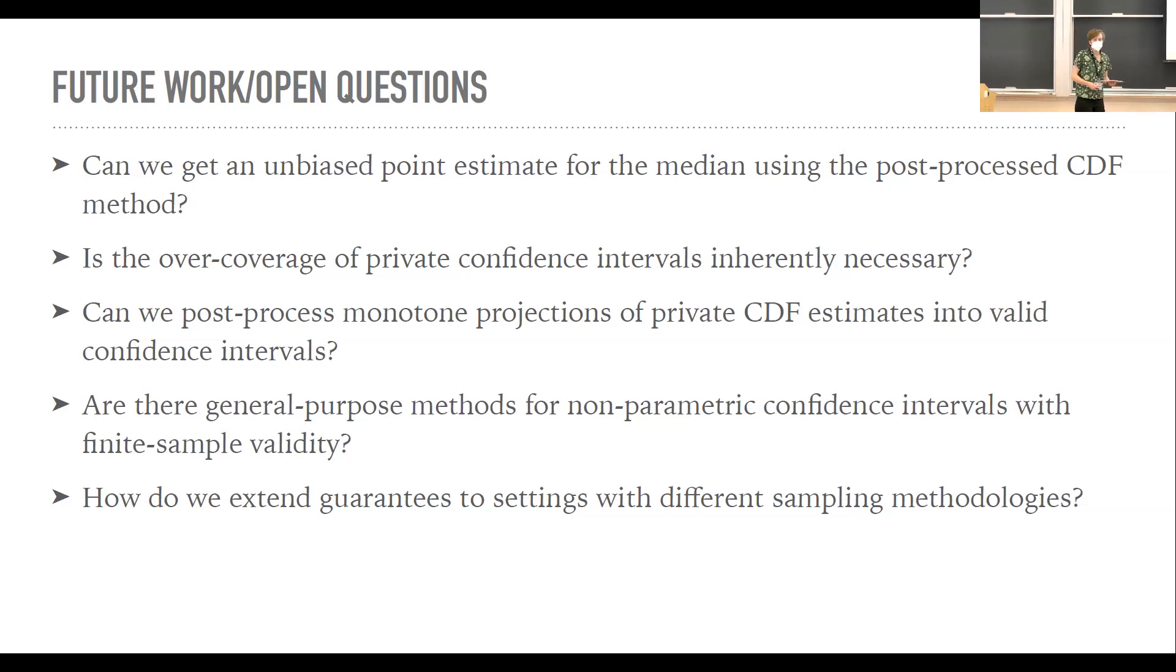Again, these are fairly bespoke analyses. It would be really great if we could have some more general purpose methods that have good finite sample validity and aren't overly conservative. And then there's also this general question. Of course, all of this analysis assumes samples that are IID. In real life, people sample using much more complex methodologies. And there's really been no work about how to do private confidence intervals in those settings. And that's it. Thank you.